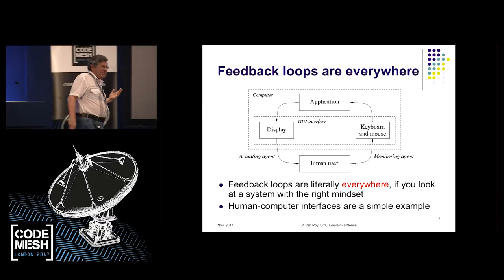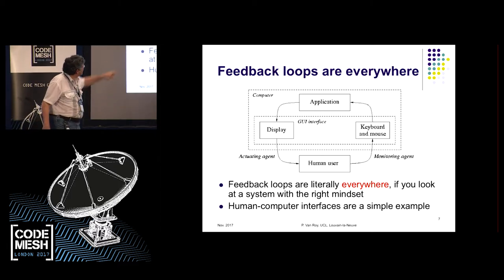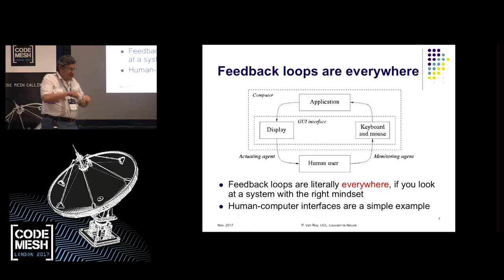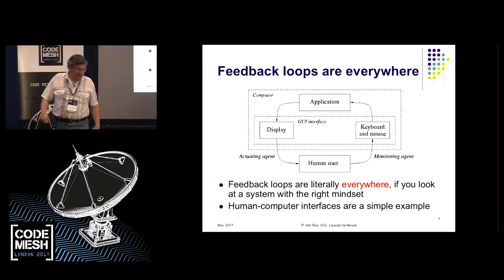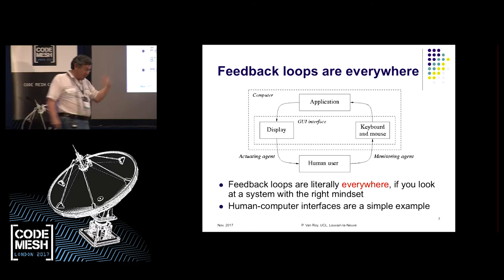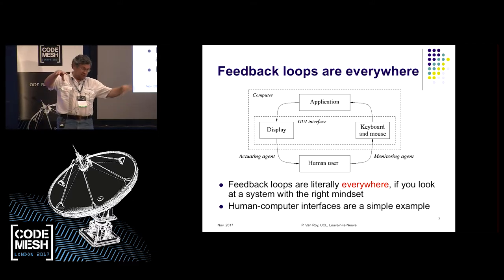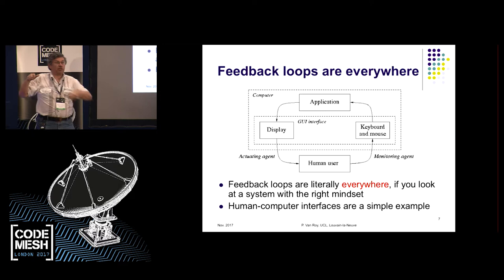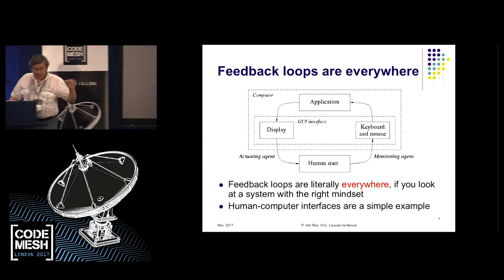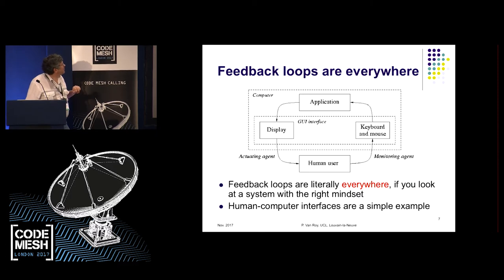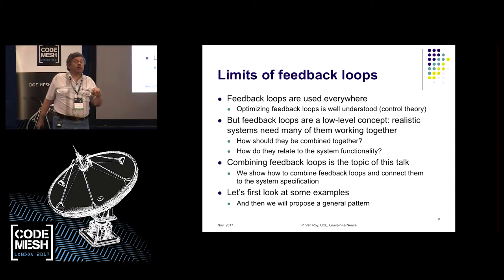Feedback loops are actually everywhere — the more you look, the more you find them. A simple example: a human user with a GUI, keyboard, mouse, application, and display — that's a feedback loop. Garbage collection is a feedback loop: the monitor waits until there's not enough free memory, initiates garbage collection, which then actuates and runs. There are many, many more feedback loops. I want to go beyond single loops.